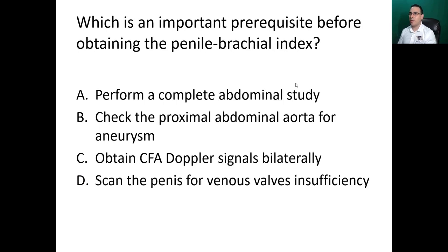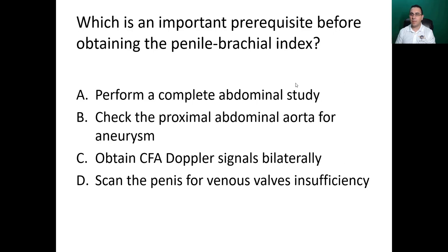Which is an important prerequisite before obtaining the penile brachial index? A — perform a complete abdominal study. B — check the proximal abdominal aorta for aneurysm. C — obtain common femoral artery Doppler signals in both legs. D — scan the penis for venous valve insufficiency. The answer is C — obtain common femoral artery Doppler signals in both legs.